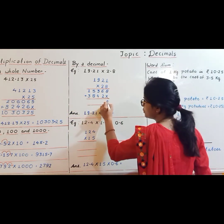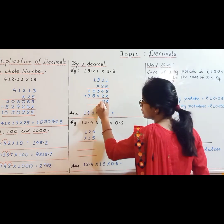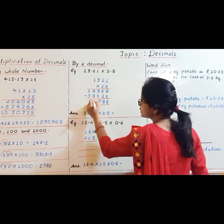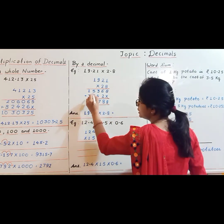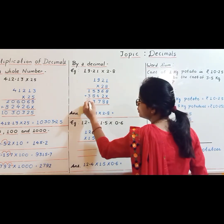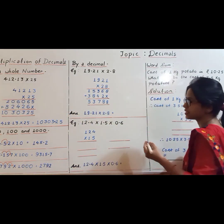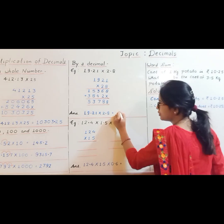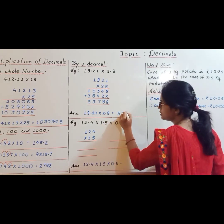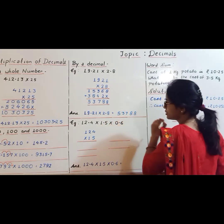Adding the rows: 8 plus 0 is 8, 6 plus 2 is 8, 4 plus 3 is 7, 8 plus 5 is 13 carry 1, that is 3, and 4 plus 1 is 5. So the product is 53788.